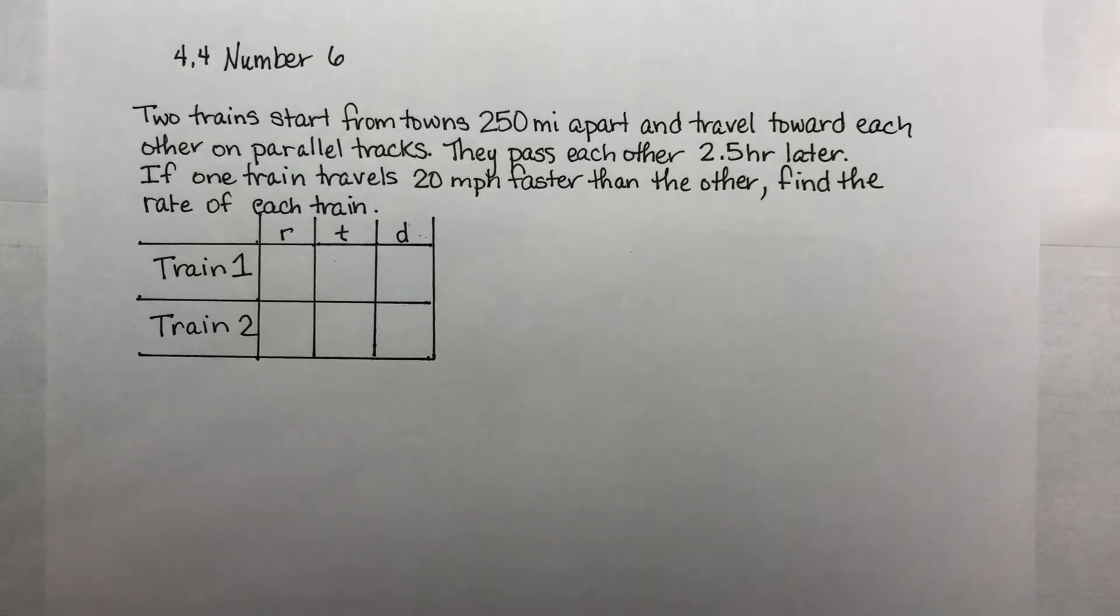Okay, let's look at number six from the homework from section 4.4. We have a distance problem. Two trains start from towns 250 miles apart and travel toward each other on parallel tracks. They pass each other two and a half hours later. If one train travels 20 miles per hour faster than the other, find the rate of each train.